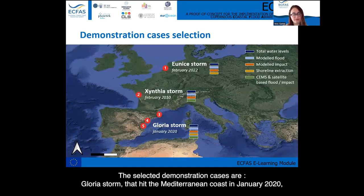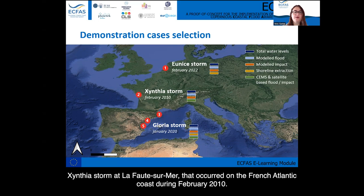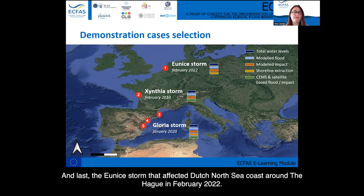The selected demonstration cases are: Gloria Storm, which hit the Mediterranean coasts in January 2020 with three different locations in Spain — Girona, Ebro Delta, and Castellón — that have the advantage of fulfilling all the selection criteria. Xynthia storm at La Faute-sur-Mer, which occurred on the French Atlantic coast during February 2010. And last, the Eunice storm that affected the Dutch North Sea coast around The Hague in February 2022.